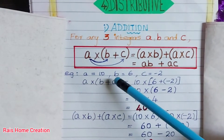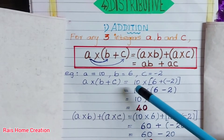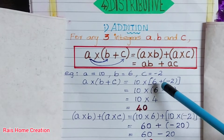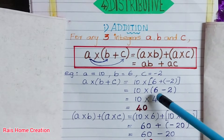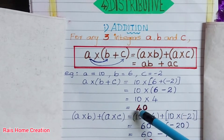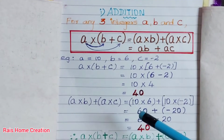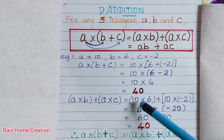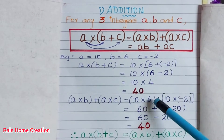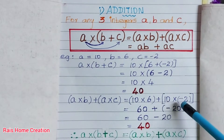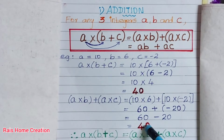Example: a equals 10, b equals 6, c equals minus 2. A into (b plus c) equals 10 into (6 plus minus 2) equals 10 into (6 minus 2). 6 minus 2 equals 4, so 10 into 4 equals 40. Now, a into b plus a into c equals 10 into 6 plus 10 into minus 2. 10 into 6 equals 60, plus 10 into minus 2 equals minus 20. So 60 minus 20 equals 40.